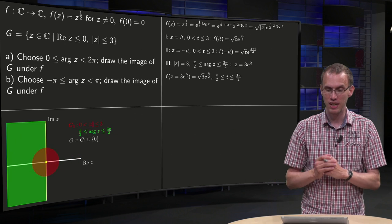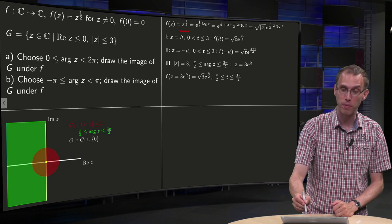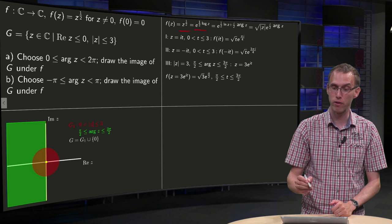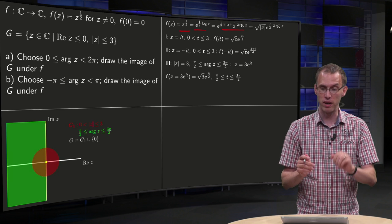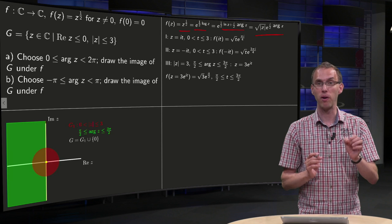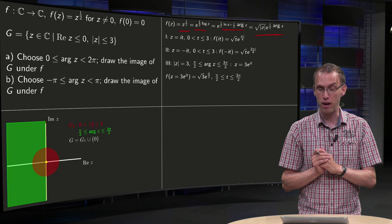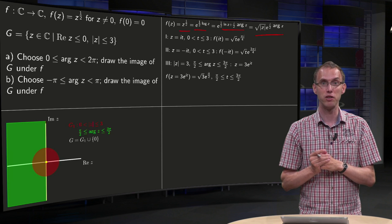Now what about our function f? f of z equals z to the power of 1 half, by definition e to the power of 1 half log of z, e to the power of 1 half ln z plus i over 2 times the argument of z, or by definition, so you get the square root of the modulus z times e to the power of i over 2 times the argument of z, where the argument of z is between zero and two pi.